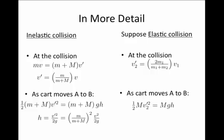And we write one-half times the cart mass times v2 prime squared has to equal the cart mass times g times h.